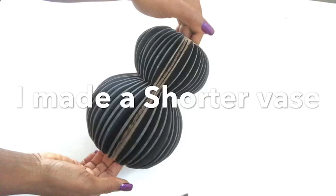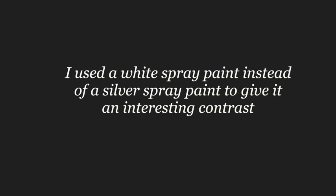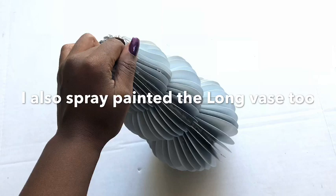using the same technique as the first vase. These are the measurements of the pieces that I used. I used white spray paint and spray painted it white. I also spray painted the longer vase.